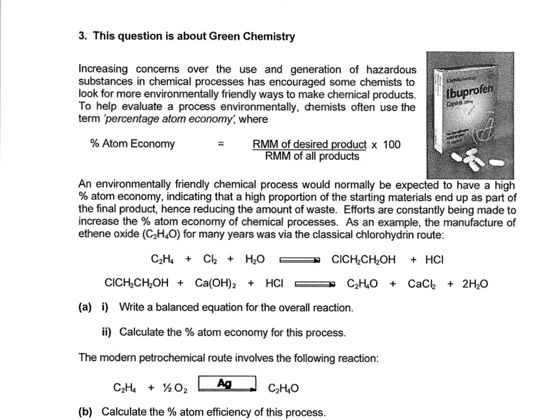So it says at the top that the first question is about green chemistry. Green chemistry is essentially the idea of how we use chemistry in a strategic way to minimize impacts or negative impacts on the environment. Obviously the text of the question pertains to that as well. So to try and analyze how environmentally friendly a reaction might be, we use the idea of percentage atom economy.